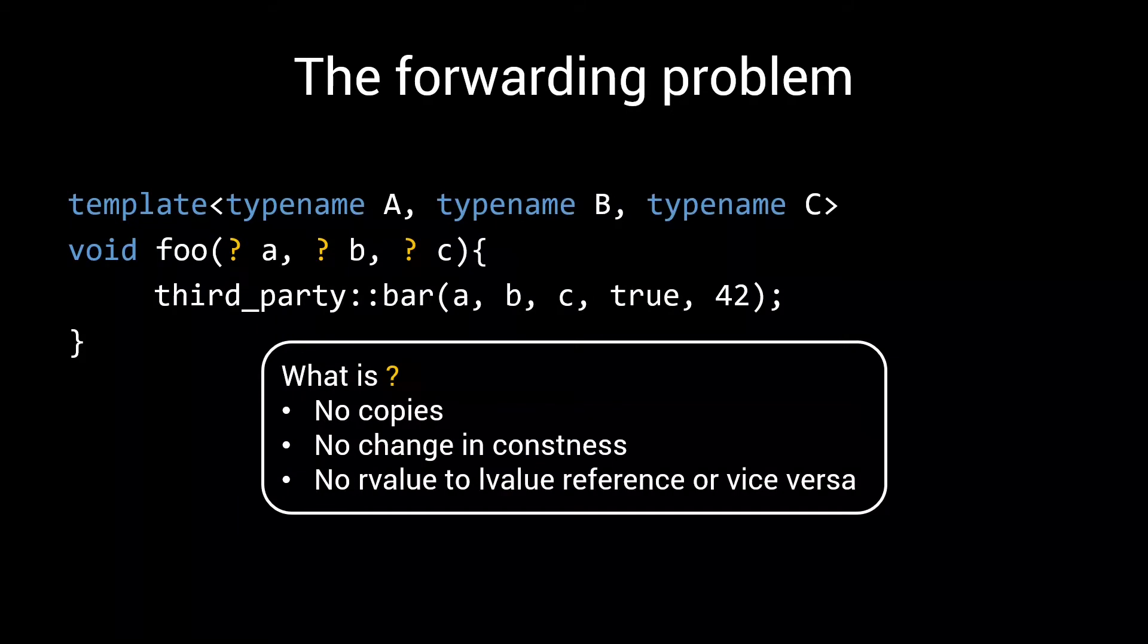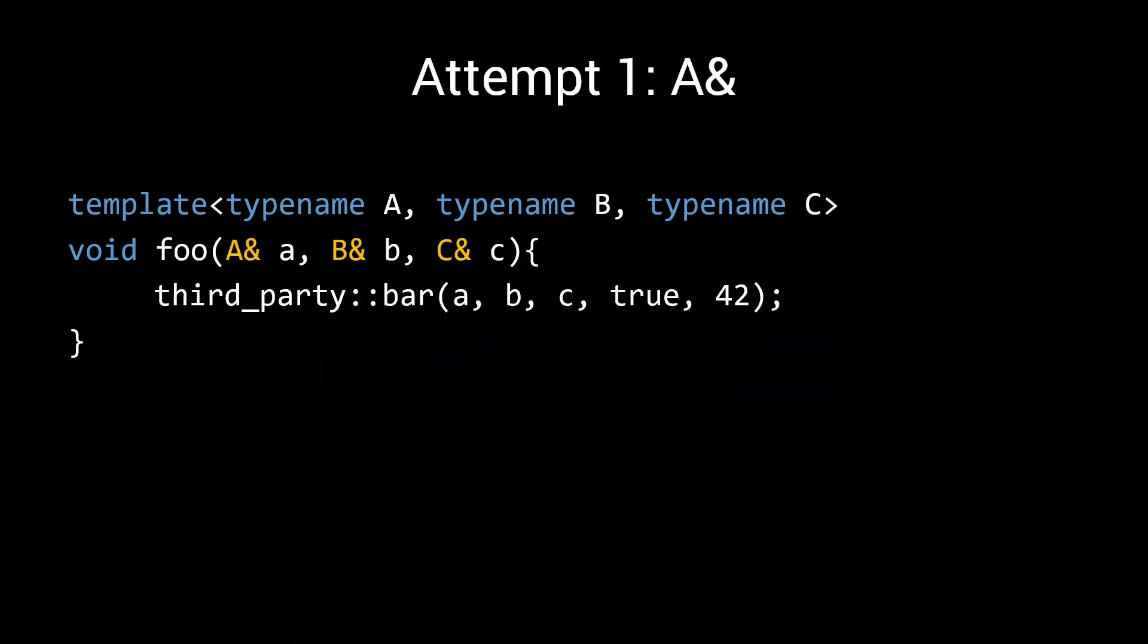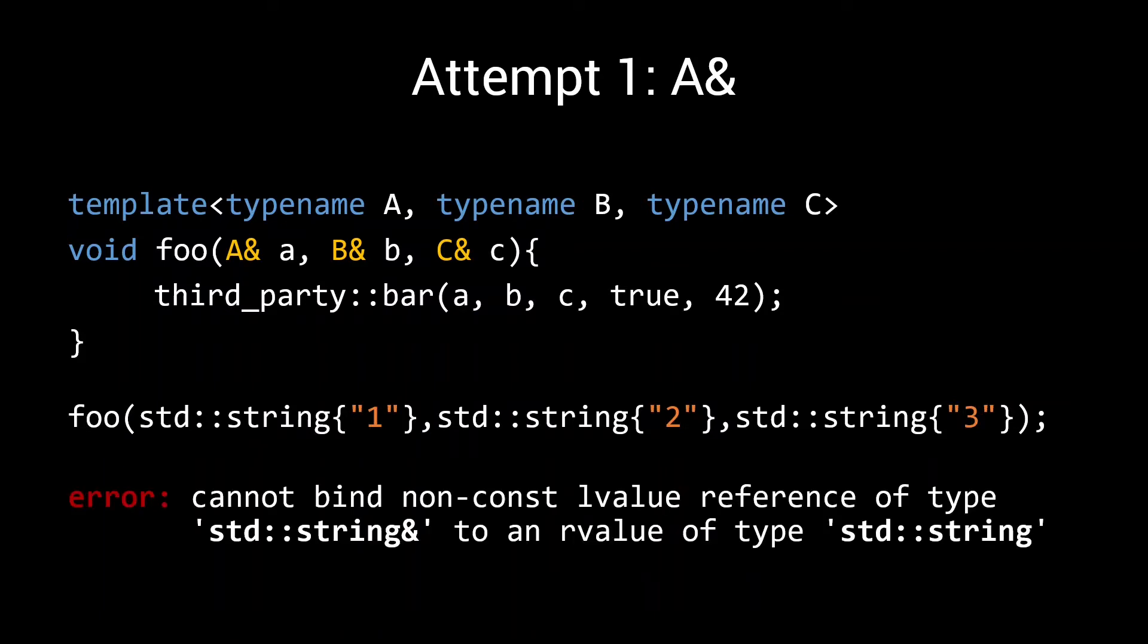So, for our first attempt at filling in our question marks, how about we simply take our inputs by reference? Something like this. This works for any l-value inputs. However, if we are dealing with a bunch of temporaries, like these strings 1, 2, and 3, then this will break. Because you cannot bind a non-const l-value reference to an r-value.